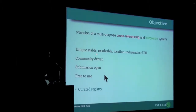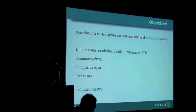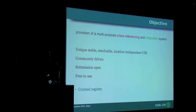The objective of Identifiers.org is to provide a multi-purpose cross-referencing and integration system. It's community driven because we're driven by the needs of the communities we serve. Originally we started off requiring a cross-referencing and annotations system for systems biology models, and as we developed that scheme, we realised that because of the common traits, we're also able to provide it as an integration system.